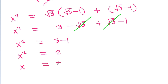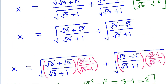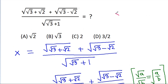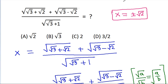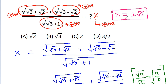So x will be equal to plus or minus a square root of 2. But here, this is positive, this is positive, this is positive, and this is positive. So x should be positive. That means x will be equal to a square root of 2. So option A is correct.